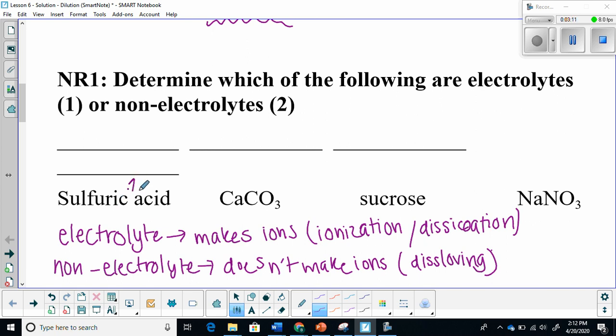Calcium carbonate, this one's kind of tricky because it's insoluble in water. So technically, it would not form electrolytes. Then we have sucrose, that's going to undergo dissolving, so it's going to be a non-electrolyte. And then you will have your sodium nitrate, which is soluble, so it will form ions.